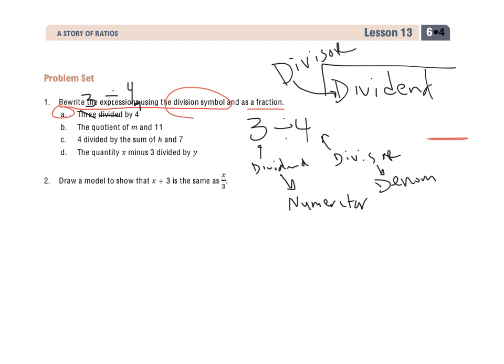So my dividend is my numerator, that's going to go on top, and my 4 is my divisor, and that's going to be my denominator. So there's the fraction form for it.